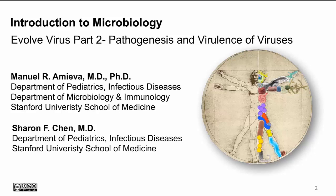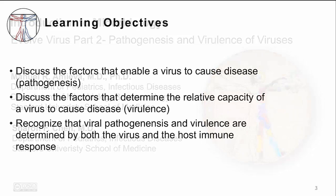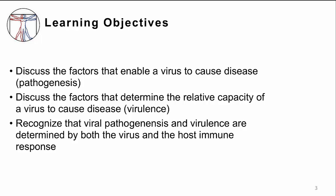This video is on the pathogenesis and virulence of viruses. The learning objectives are to discuss the factors that enable a virus to cause disease, or pathogenesis; to discuss the factors that determine the relative capacity of a virus to cause disease, or virulence; and to recognize that viral pathogenesis and virulence are determined by both the virus and the host immune response.